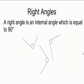The first angle we need to talk about is right angles. Right angles are angles that are equal to 90 degrees. This is very important — right angles are always 90 degrees.